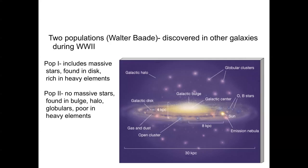In the time of World War II, Walter Baade, who was a scientist at Caltech, discovered, looking at other galaxies, that there were these two characteristic populations that I've just described. Population 1 includes the massive stars that are found in the disk and are rich in heavy elements.